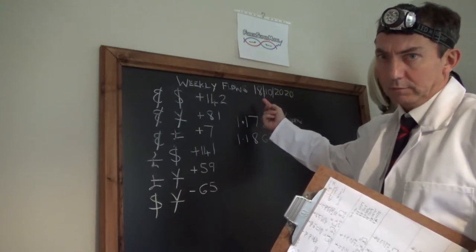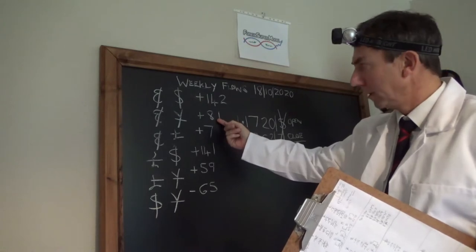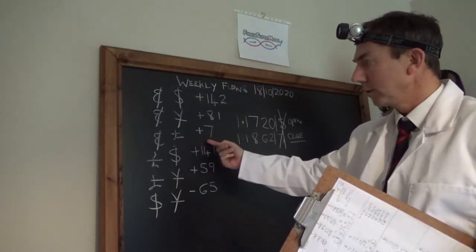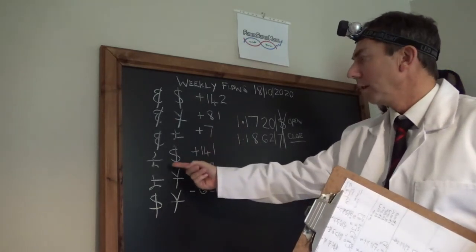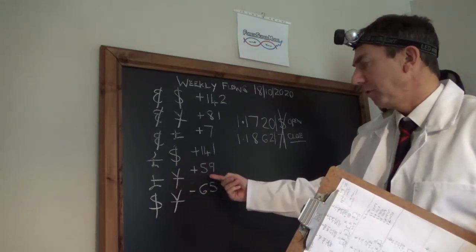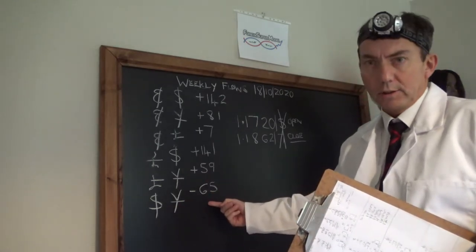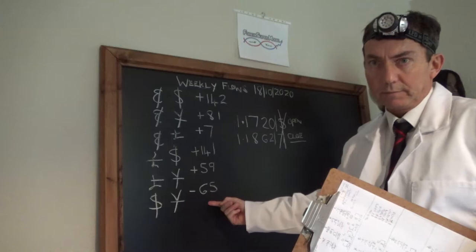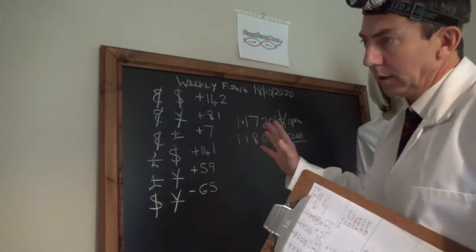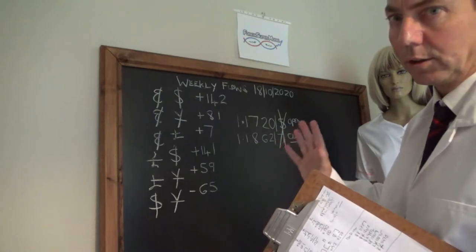The euro-yen went up 81 points. The euro-pound, 7 points. The pound-dollar, 141 points. The pound-yen, 59 points. And the dollar-yen, 65 points.